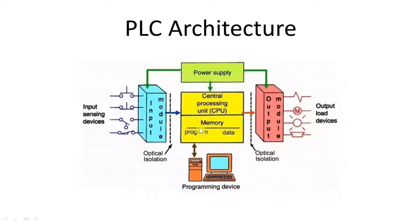The next main part is the memory. In memory there are two main parts. The PLC ladder diagram or main program of the PLC is stored in program memory, and in data memory it saves the status of inputs, outputs, software relays, and timers.